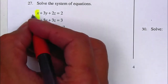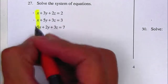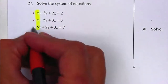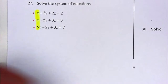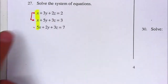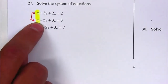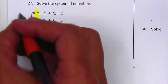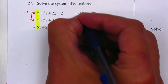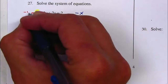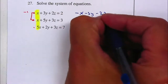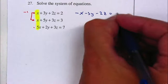So you need to get two equations. You can use the first and second, the first and last, or the second and last. I'll take the first and second equation, and multiply by negative one to cancel the X's. That gives me a negative X, negative 3Y, negative 2Z, equal to negative two.